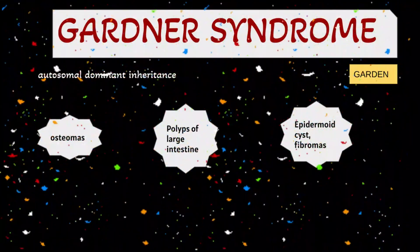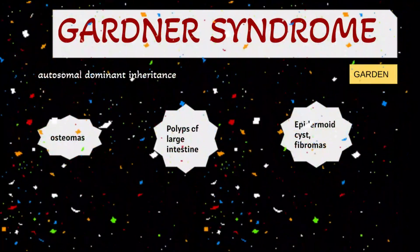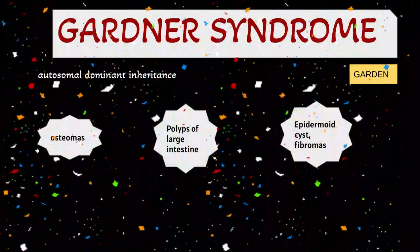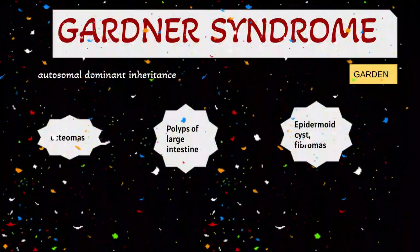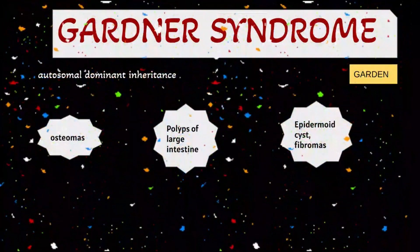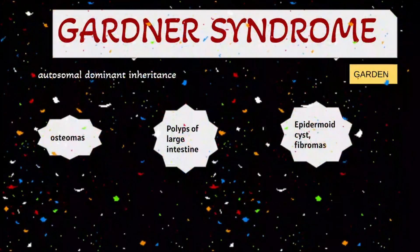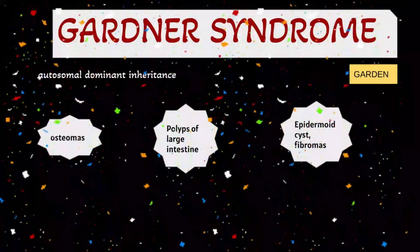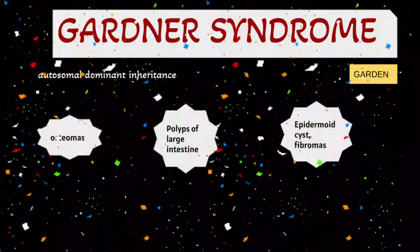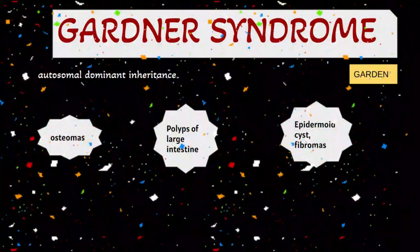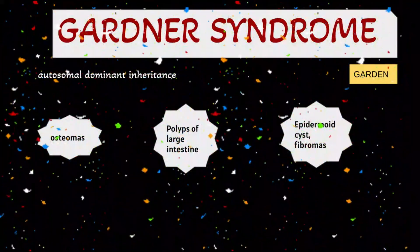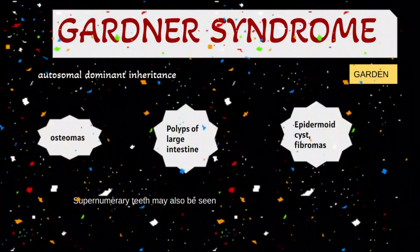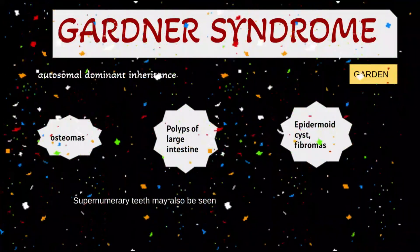These three things — the triad of multiple osteomas, multiple polyps of the large intestine, and epidermoid cysts and fibromas of the skin — comprise Gardner syndrome. It's a very important syndrome from an exam point of view, and a lot of questions come in all the dental exams.